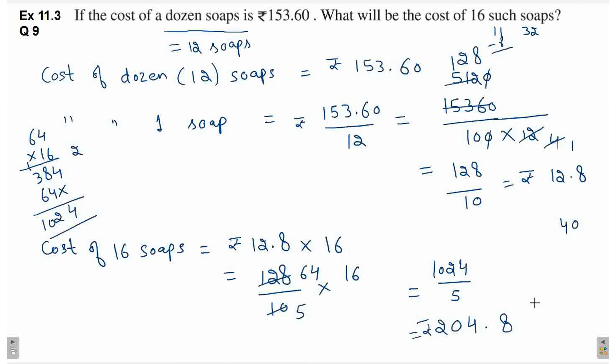Jab hum rupees ko aise decimals mein likhte hain na, toh hum isko aise 2 digits tak complete kar dete hain. 0.8 tak aaya tha, toh hum pichhe ek aur 0 laga denge. Isko bana denge 0.80. Rupees 204.80 is your answer.